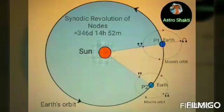Now imagine the Earth is going around the Sun in an anti-clockwise direction and the nodes are revolving around the Earth in a clockwise direction. So the Sun, Earth, and the nodes come back to the same position with respect to each other before the completion of one year — that is, 346 days, 14 hours, 52 minutes. This is called the synodic revolution of the node.